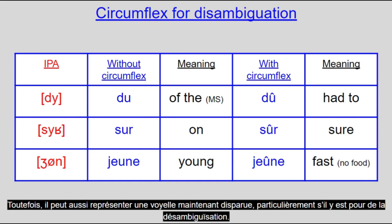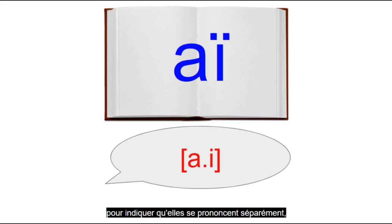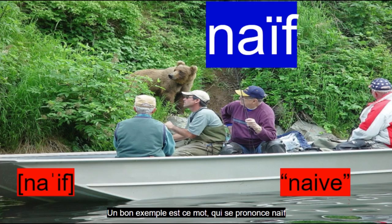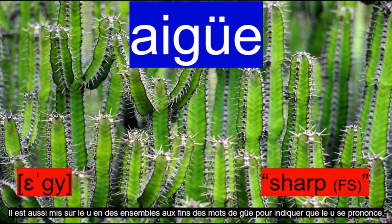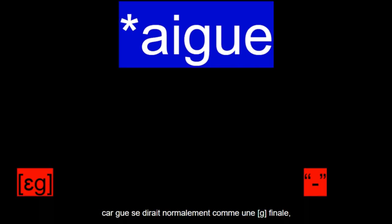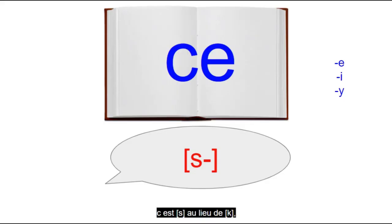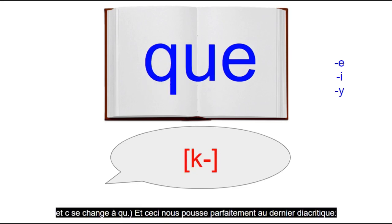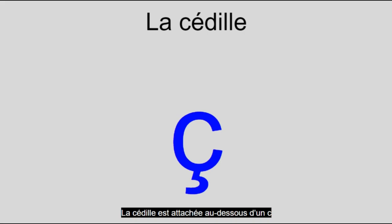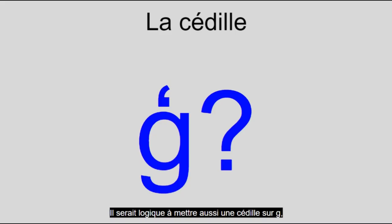Finishing off vowel diacritics, the diaeresis, or le tréma, is put on the second vowel of a pair to indicate that they are pronounced separately and not as a digraph. A good example is naïf, which is pronounced /naif/ and not /nɛf/, which is how it would be pronounced without the diaeresis. It's also put in the U in GUE word-final sets to indicate that the U is pronounced, as GUE would normally be said as just the final /g/, since the GE ending is read as /ʒ/. C and G: C is /s/ rather than /k/, and G is /ʒ/ rather than /g/ when before E, I, or Y. To negate this, U is inserted after G, and C is changed to QU. This leads to the last diacritic — the cédilla, or la cédille, is attached under a C to indicate that it's pronounced /s/ despite not being before E, I, or Y, like in garçon. It would be logical to also put a cédilla on G, but instead they just insert a silent E.